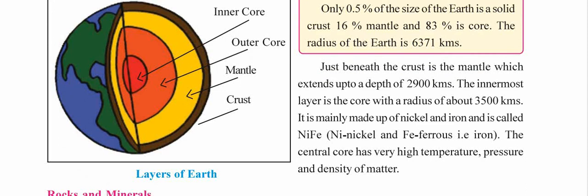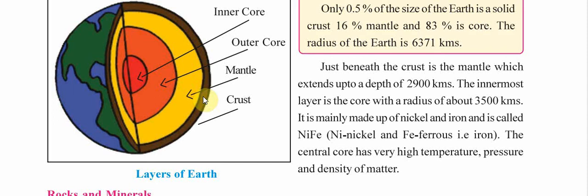Looking at the diagram showing the layers of the earth, we can clearly see that the first layer is the crust — the thinnest region. Below the crust we have the mantle — spelled M-A-N-T-L-E — and then we have the core, which is further divided into the inner core and outer core.